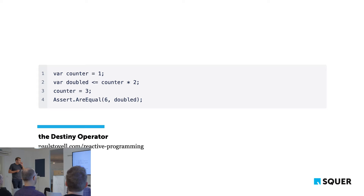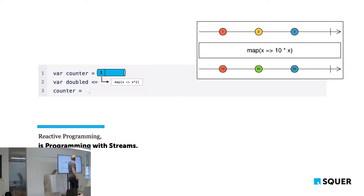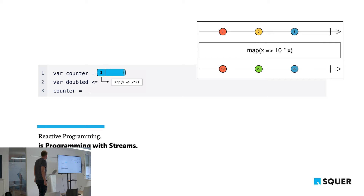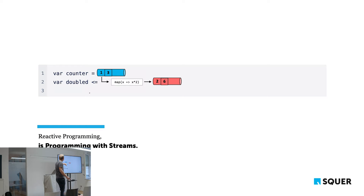What has this to do with streams? Usually this is implemented by streams. Counter is a stream with value 1. Doubled is a stream transformation — we map the existing stream and multiply it by 2. When we change counter to 3, all we do is push 3 into the counter stream, and this automatically updates the doubled stream to 6. That's basically reactive programming.